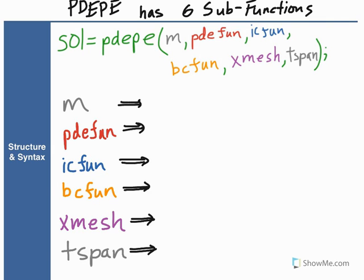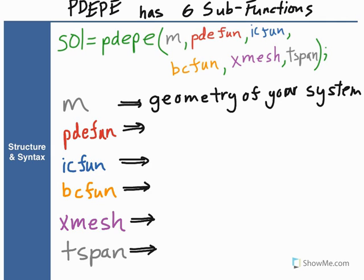The way MATLAB is set up is that its PDEPE solver has six sub-functions. I'll do my best to keep any coding language written in green. The first sub-function is m, and this is just used to describe the geometry of your system—if it's cylindrical, spherical, or a slab. PDEfun is a PDE function, a PDE sub-function, and this is where we're going to stick our partial differential equation parameters.